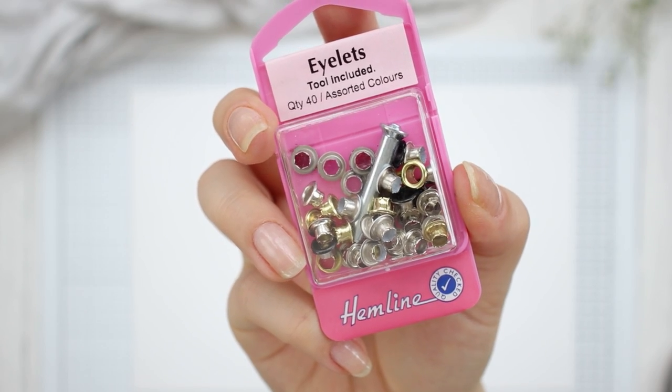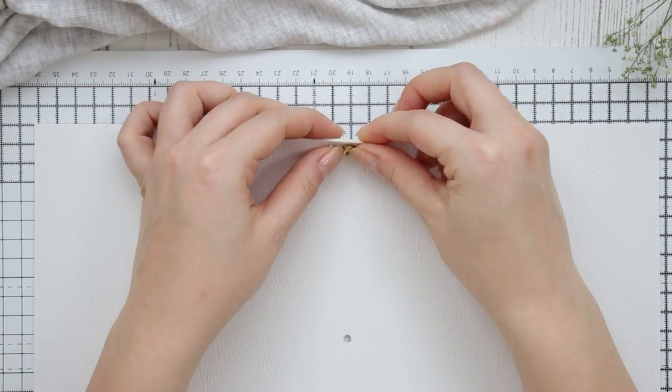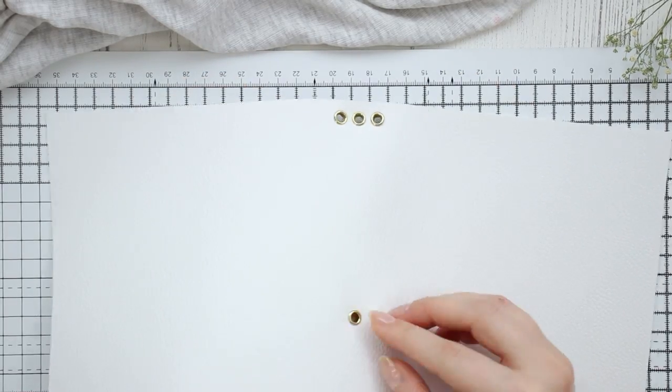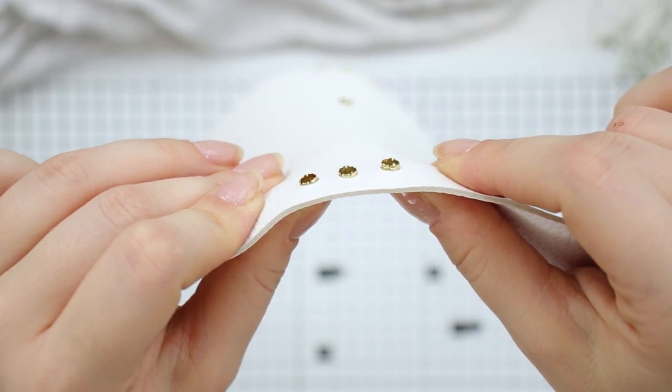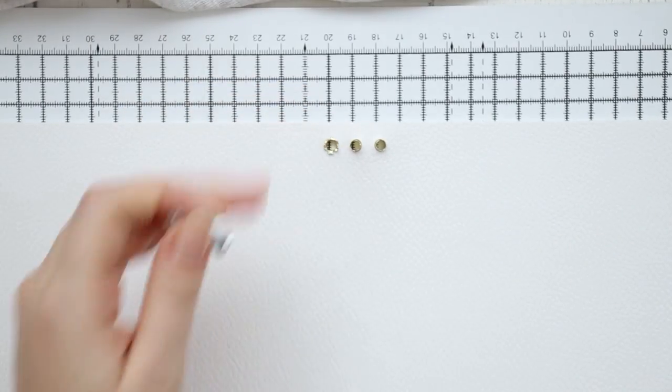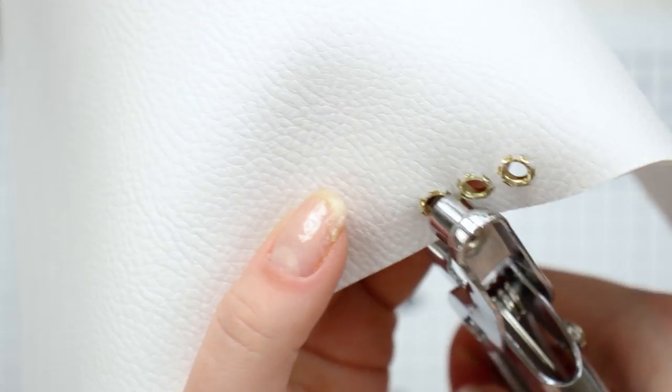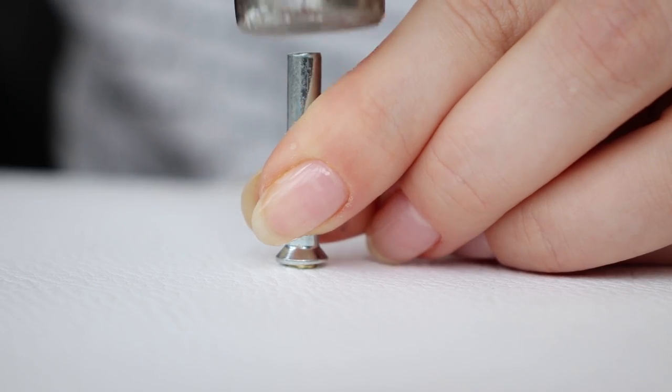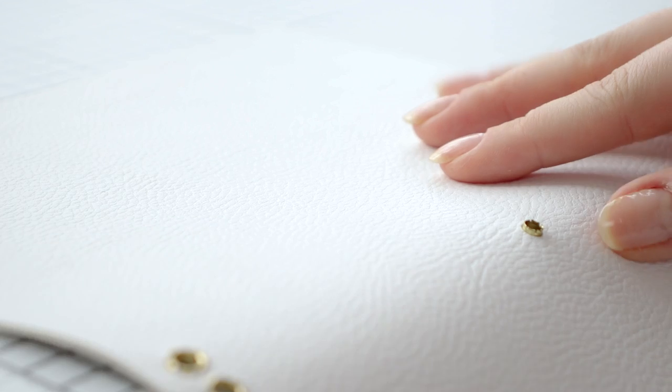Next you're going to need either a tool or an eyelet plier to set the eyelets and I'm going to show you how to use both. So fit the eyelets inside the holes from the outside to the inside of the cover, though in my case it didn't really matter because both sides were the exact same. Place the tool on the other side of the eyelet and use the hammer to set it. If you have eyelet pliers, this will work as well. Just give it a good squeeze and you're done. For the hole in the middle, it's really easy to set it with the tool, but if you're using pliers then you can still make it work. Just bring your cover to the edge of the table, open up the pliers and use a hammer to set the eyelet.